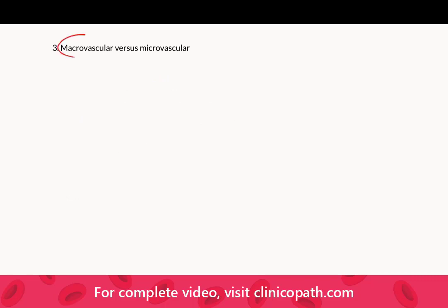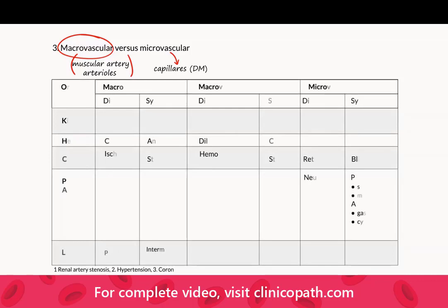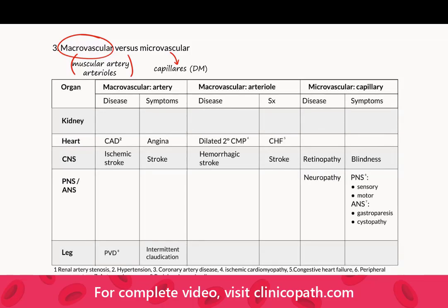When we talk about macrovascular, this means the muscular arteries — so that's the renal artery — and the arterioles, including some of the small arteries. When we talk about microvascular, we're only talking about capillaries, and therefore we're only talking about diabetes mellitus. If you can do this table, you can do all of the vascular diseases of the whole body. There are no primary vascular diseases of the kidney — they're all markers of a systemic disease. You've got to be able to do macrovascular and microvascular disease for every organ system.